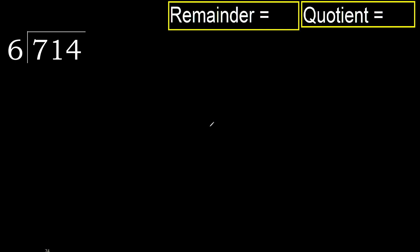714 divided by 6. Starting with 7 — 7 is not less, so we work with 7. 6 multiplied by which number is nearest to 7 but not greater? 6 multiplied by 2 is 12, which is greater. 6 multiplied by 1 is 6, which is not greater.